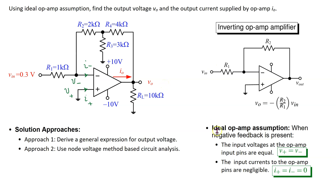We will solve this circuit using ideal op-amp assumption. This states that when negative feedback is present, the input voltages at the op-amp input pins, denoted by V plus and V minus, become equal. Also, the input currents to the op-amp pins, denoted by I plus and I minus, become zero. In other words, under negative feedback, the op-amp internal circuitry works such that the output voltage attains a value needed to force V plus equal to V minus, and I plus and I minus to be zero.